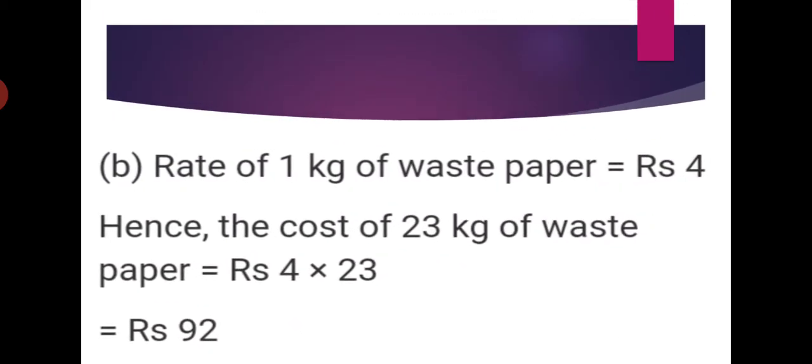Next question: 23 kg of waste paper. Again write the price of 1 kg first, then find the cost of 23 kg. Rate of 1 kg of waste paper equals rupees 4. So cost of 23 kg of waste paper is 23 into 4. Calculate in the rough space: 3 fours are 12, 1 carry, 4 twos are 8 plus 1 is 9. The answer is rupees 92.